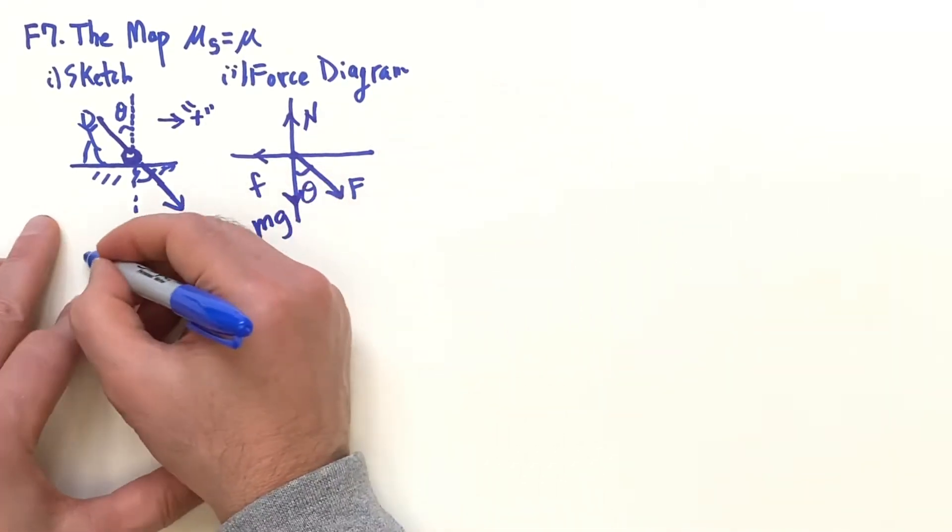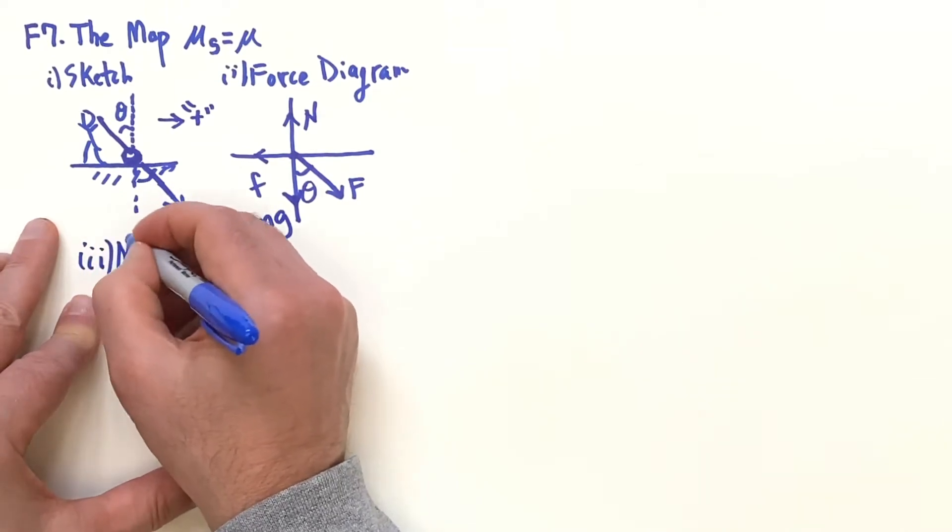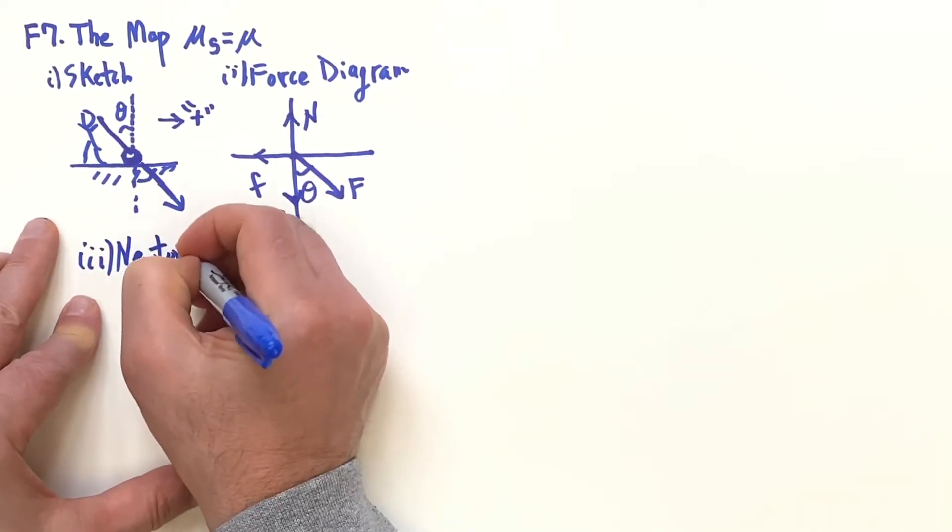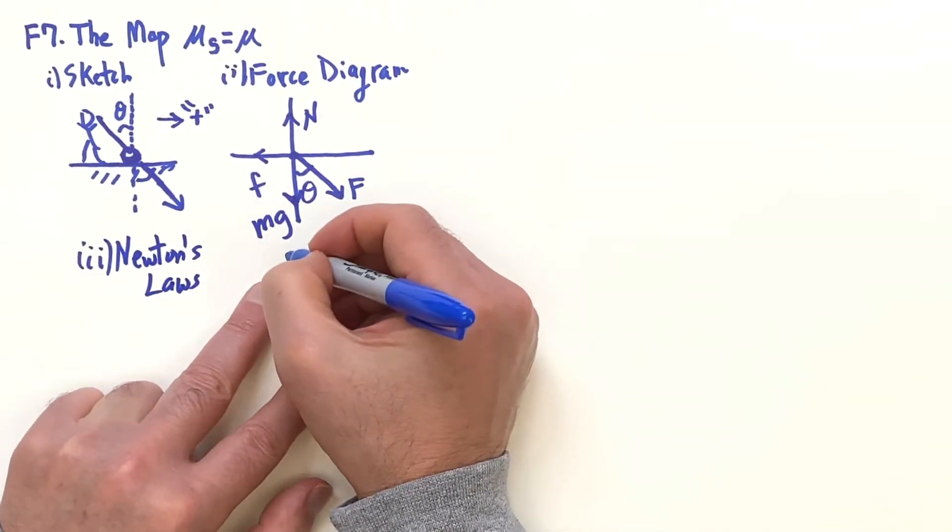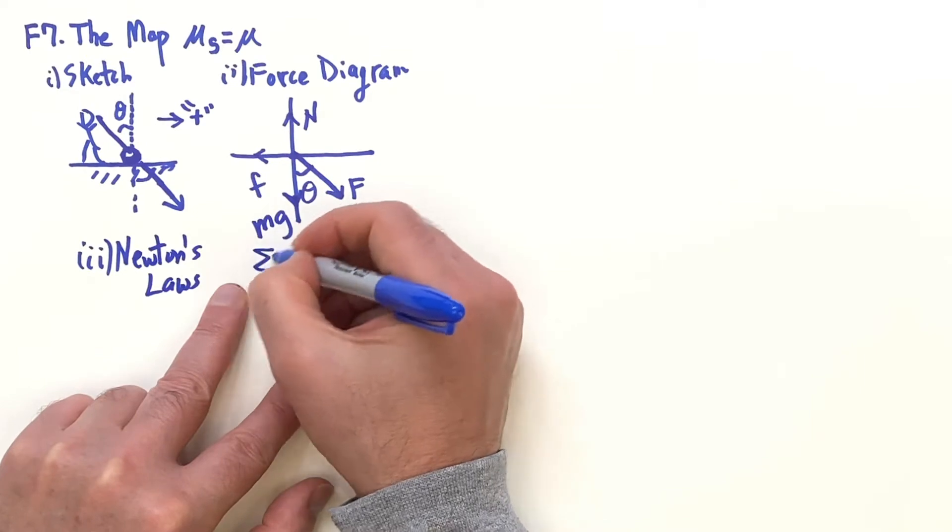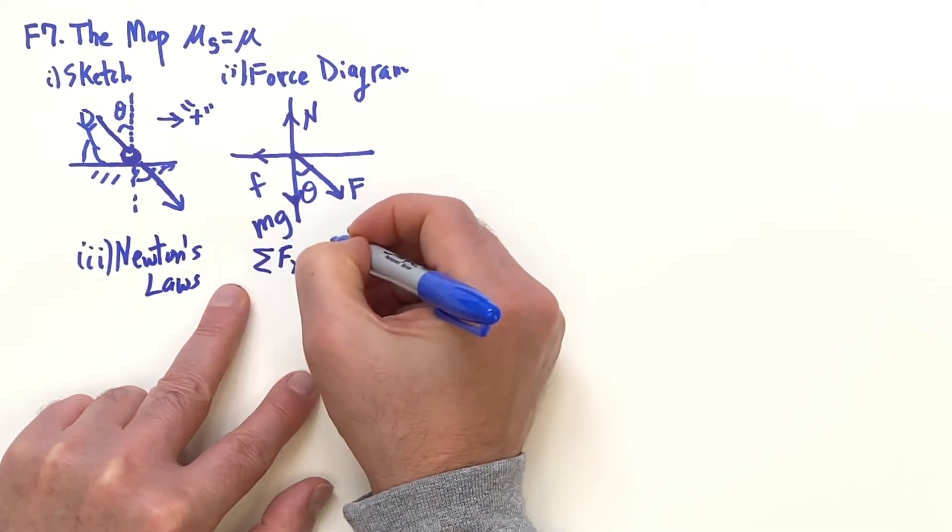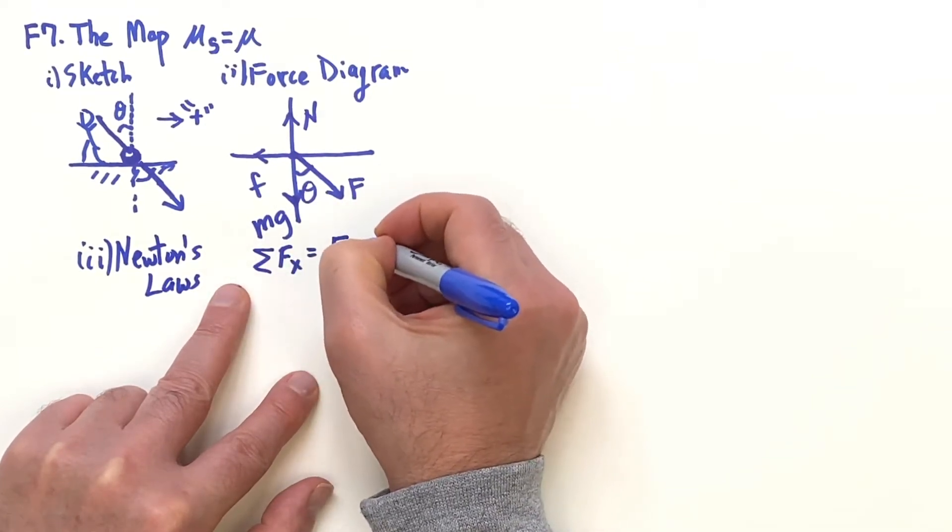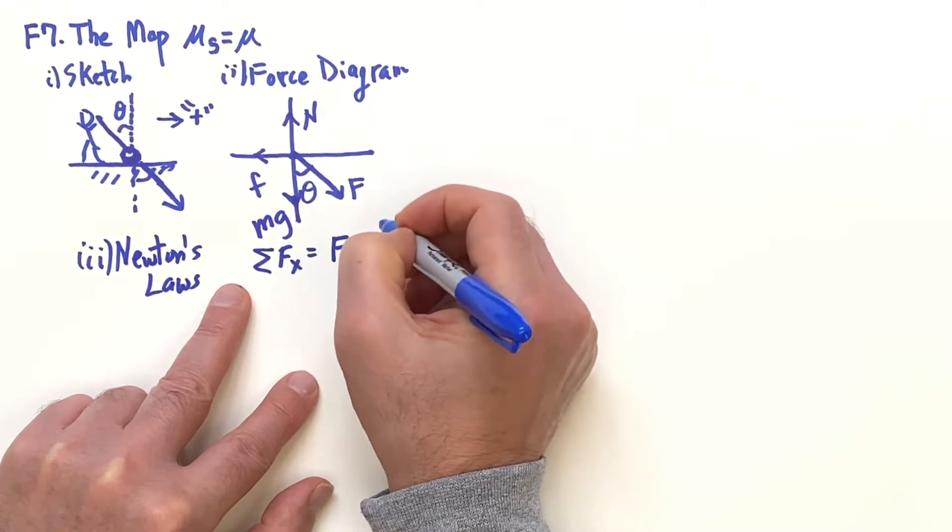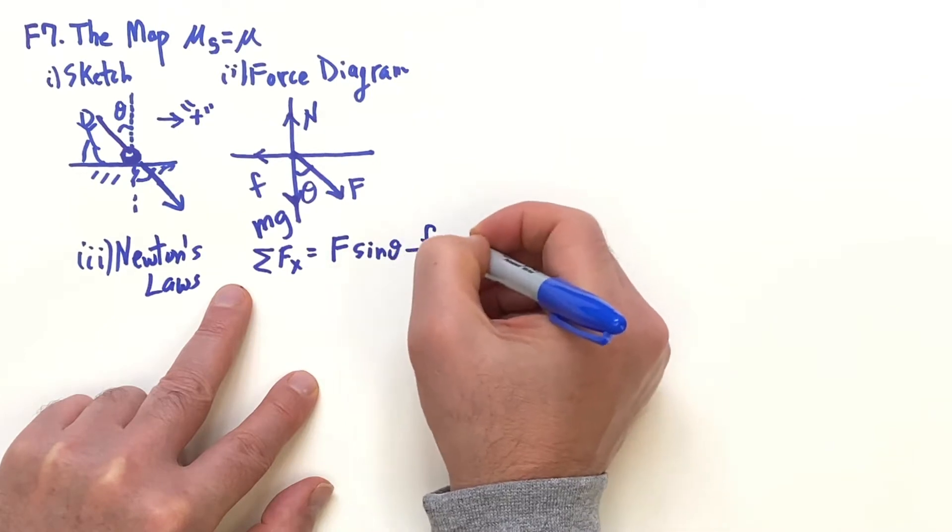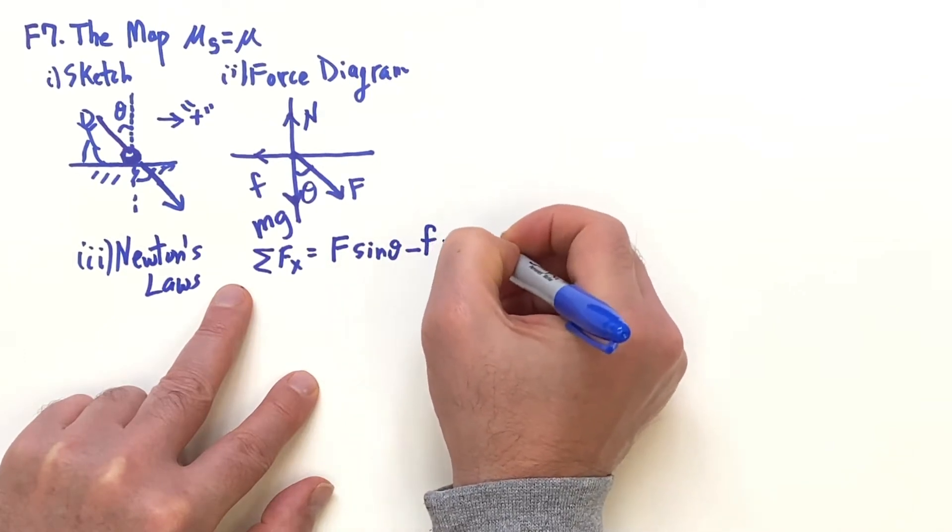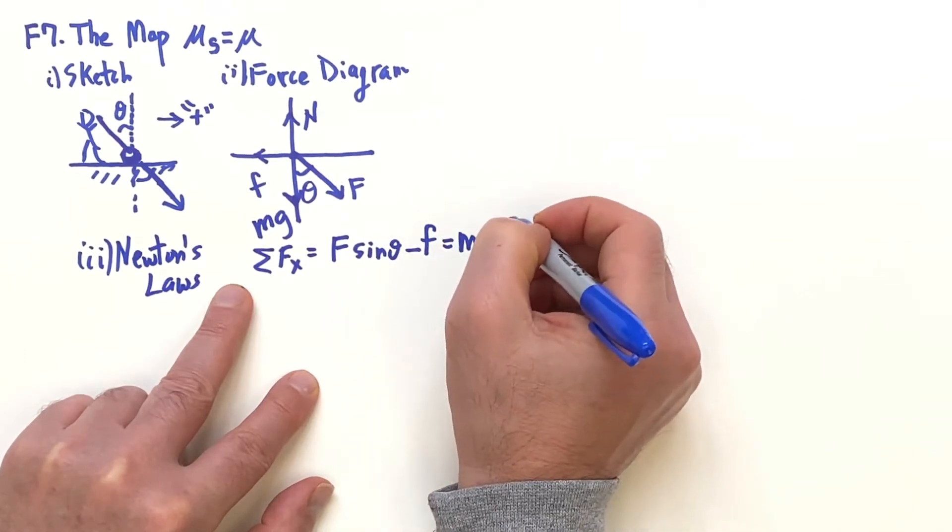Now we're ready for the equations: Newton's laws. Here we can sum the forces in the x direction, which would be F sin θ.